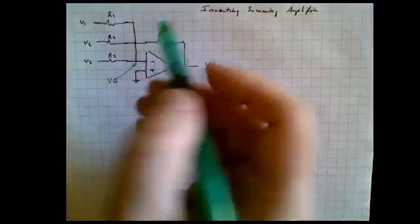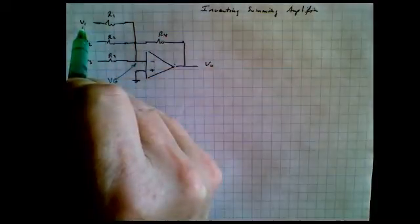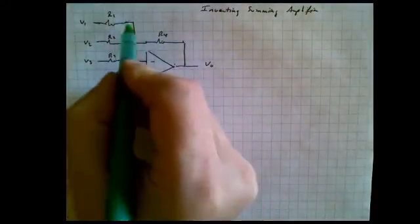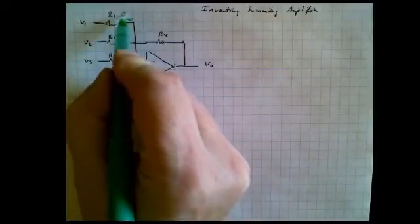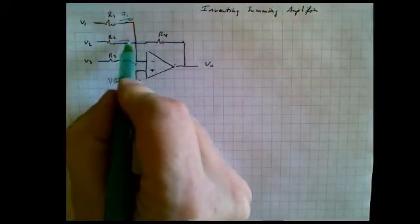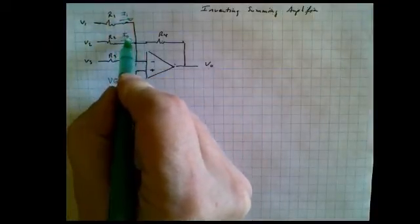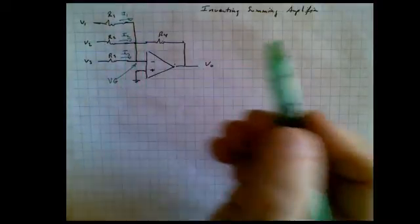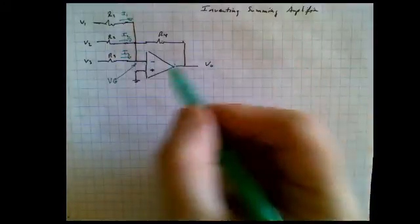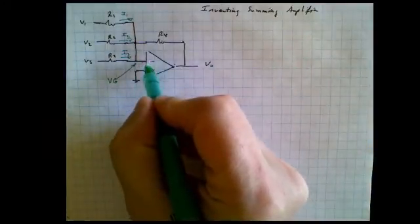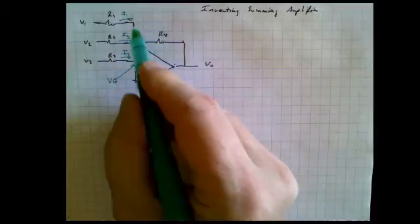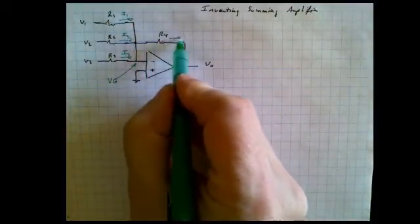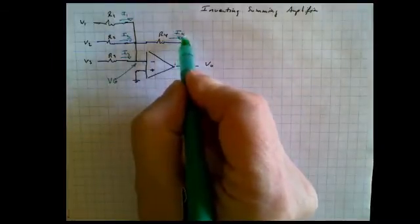So as we begin to look at the circuit and we notice the voltage goes in here and this other end of the resistor is at the ground, we realize we have a current flowing in here and we'll just call it I1. And we have a current flowing here, I2. And a current flowing in here, I3. And we wonder where is that current going? Well, it's not going into the virtual ground because it's high impedance. In fact, the only place it's got to go is right here, through R4. So this becomes I4.